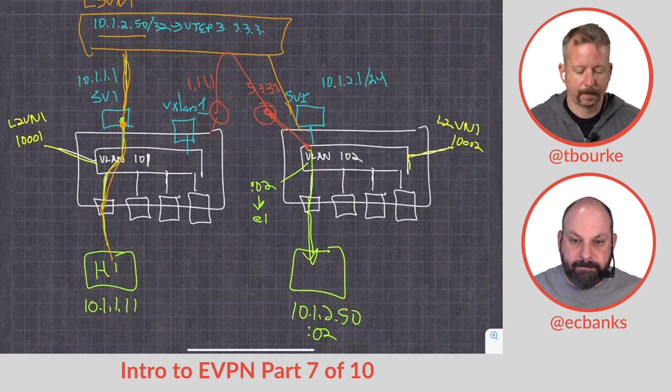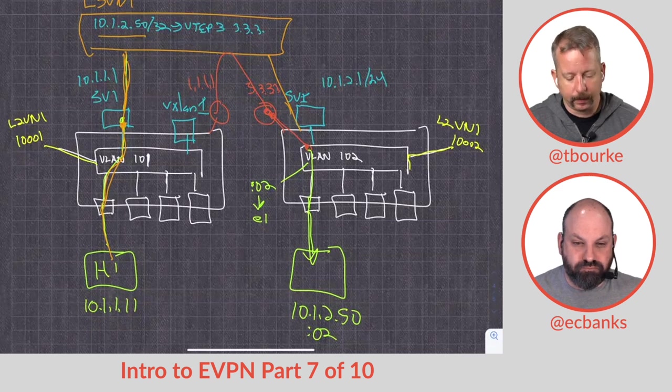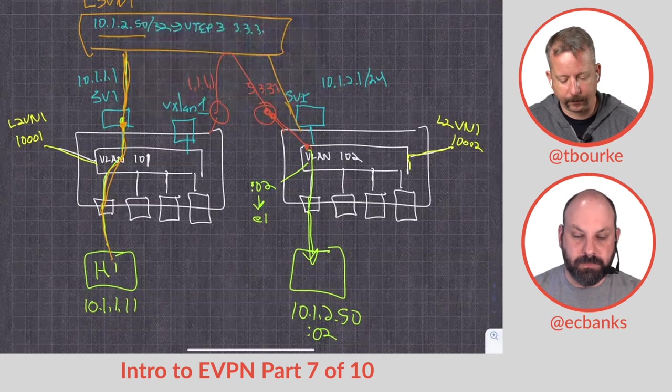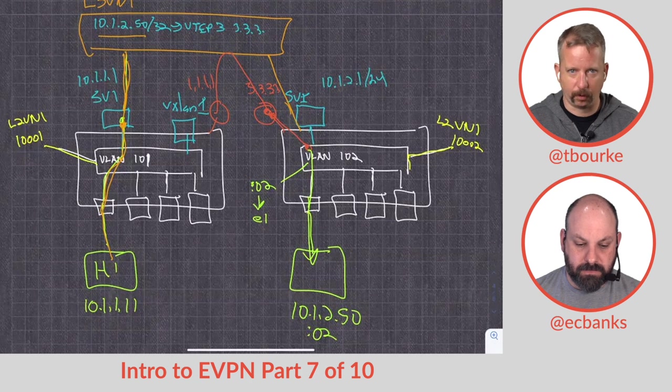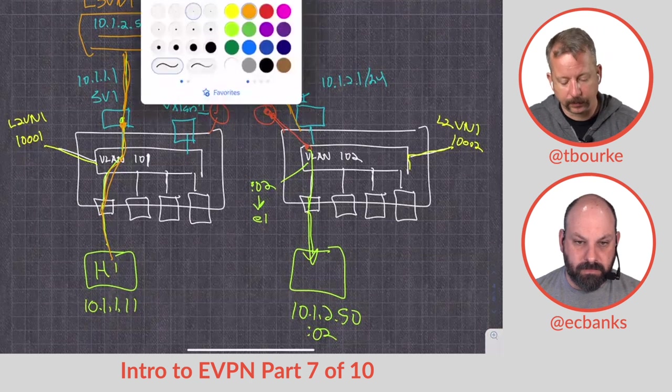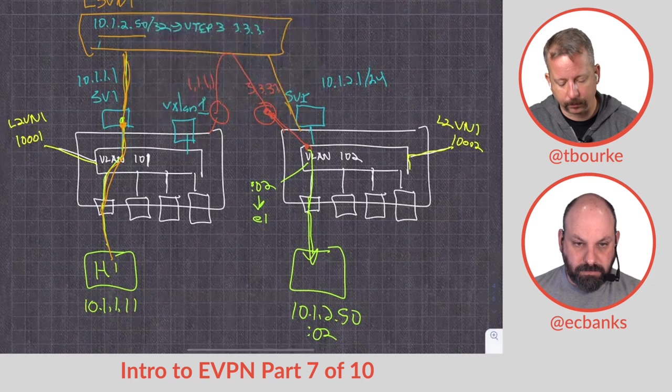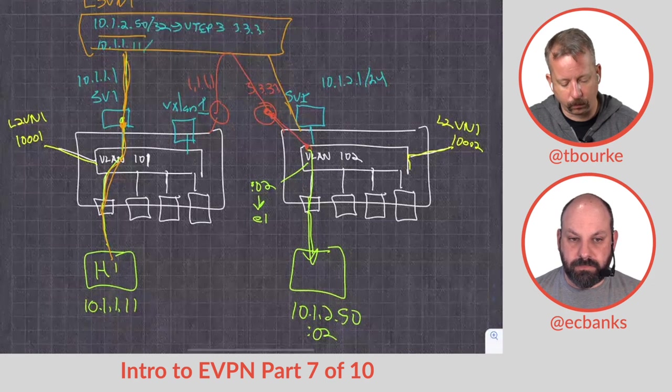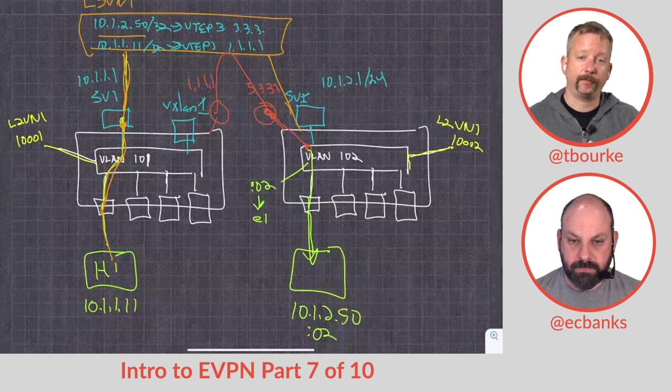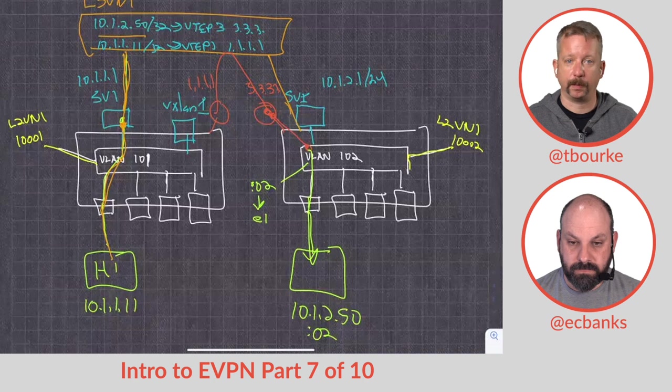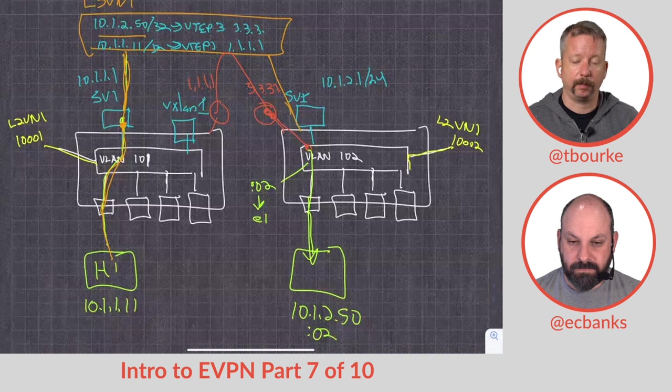The layer 3 VNI forwarding table space is going to be identical to all devices. It should have the same information. So another route is going to be in there, 10.1.1.11/32 is on VTEP1. Now, LEAF3 and LEAF1 can make sure that packets get to the right place, because they both have routes to get host1 and host2, we can get them to each other.